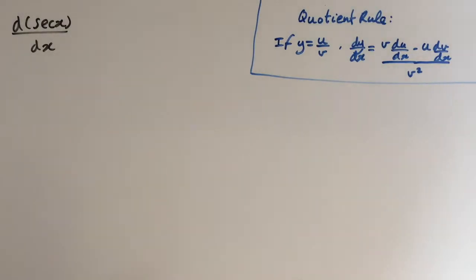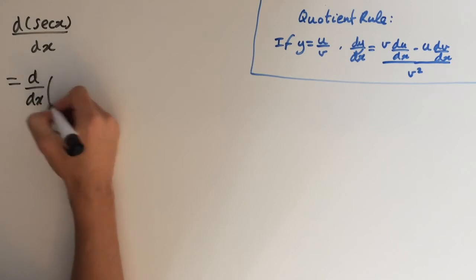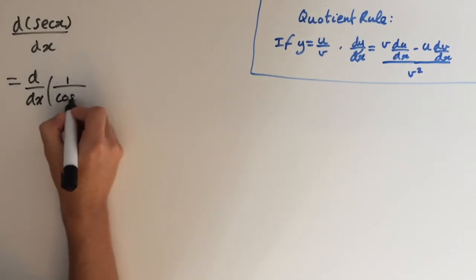Hey guys, in this video I'm going to show you how to find the derivative of sec of x. So what we can do is we can write sec of x as 1 over cosine of x.